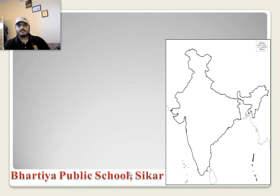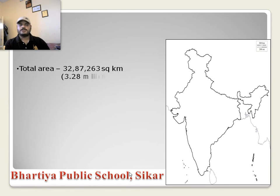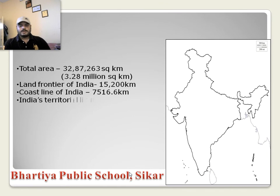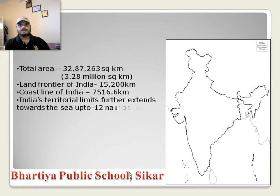In the next slide we will discuss about the total area of India, that is 32,87,263 square kilometers or 3.28 million square kilometers. The land frontier of India is 15,200 kilometers and the coastal line of India is 7,516.6 kilometers, including both Andaman & Nicobar and Lakshadweep islands. India's territorial limit further extends into the sea up to 12 nautical miles — one nautical mile equals 1.852 kilometers. All resources within this 12 nautical mile territorial limit belong to the central government.